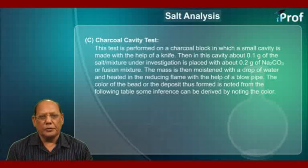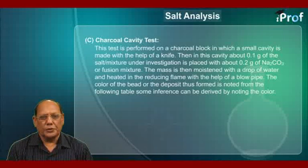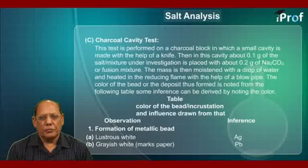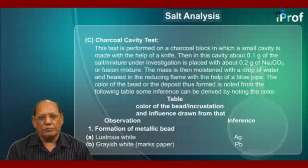The color of the bead or the deposit thus formed is noted. From the following table, some inference can be derived by noting the color. Here is a table which gives the color of the bead or incrustation and the inference drawn from that. In the first column we have observations and in the second column, inference about the metal present.